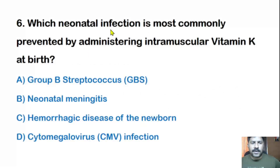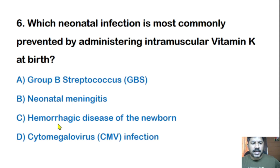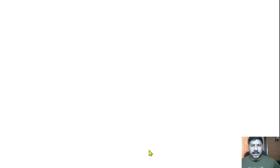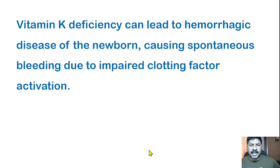Sixth question: Which neonatal infection is most commonly prevented by administering intramuscular vitamin K at birth? Vitamin K deficiency can lead to hemorrhagic disease of the newborn, causing spontaneous bleeding due to impaired clotting factor activation. Administering vitamin K at birth prevents this condition.